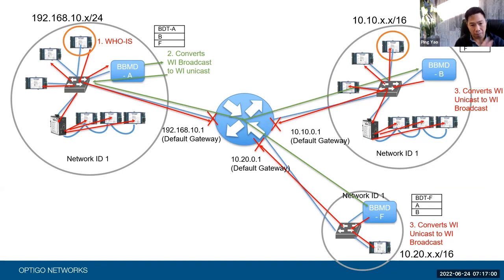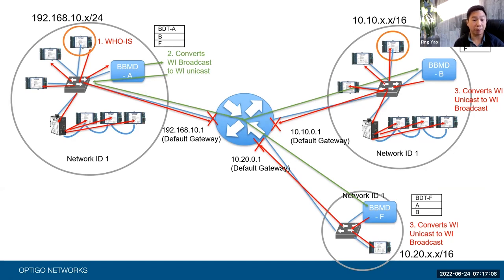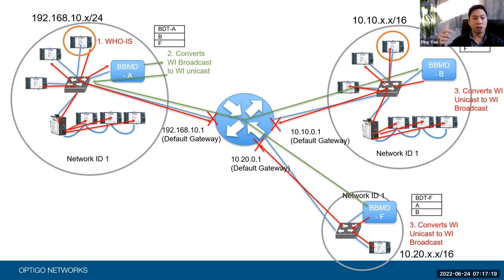It takes a BACnet broadcast message, converts it into unicast, and when it receives a unicast BACnet broadcast sent by one of its peers, it converts it back into broadcast. There are two functions. They call it two-hop broadcast distribution. The first hop goes from broadcast to unicast. The second hop goes from unicast back to broadcast.